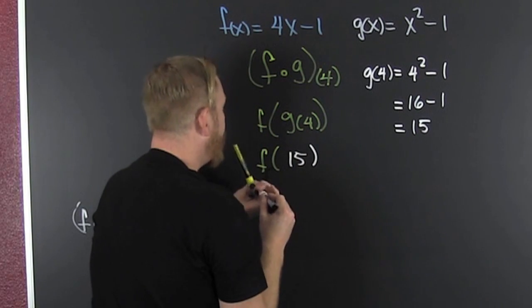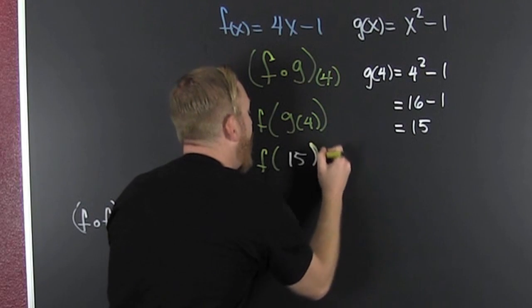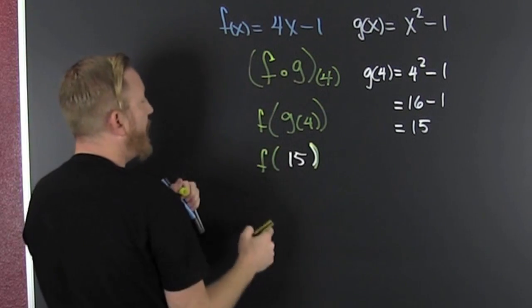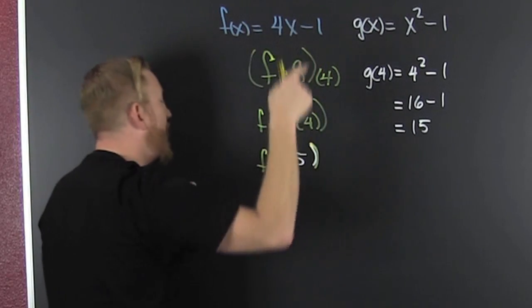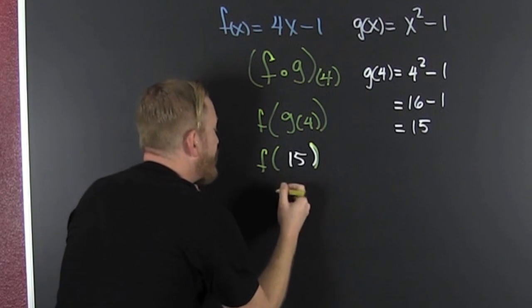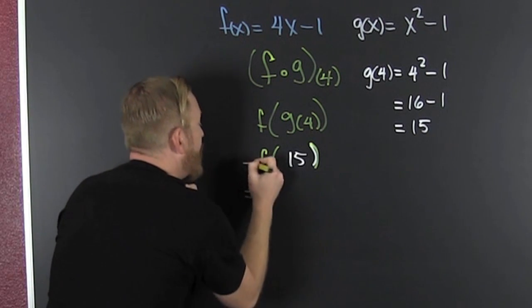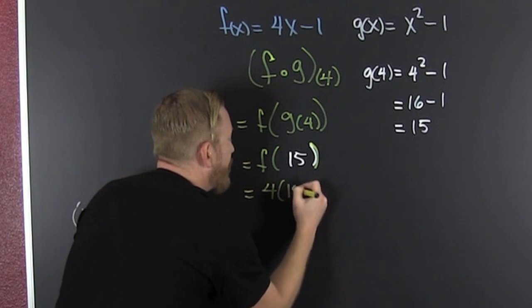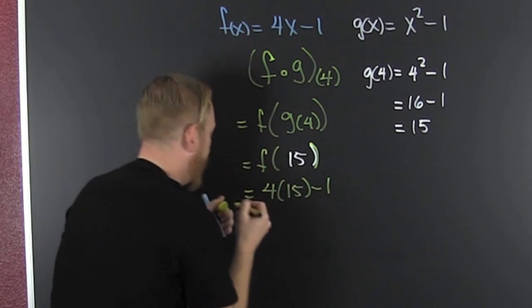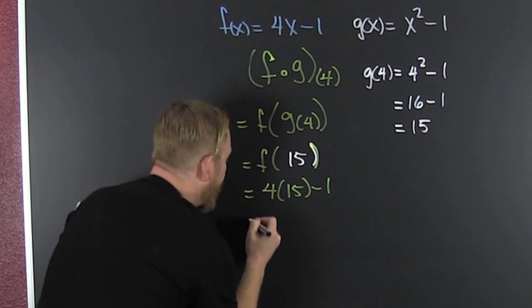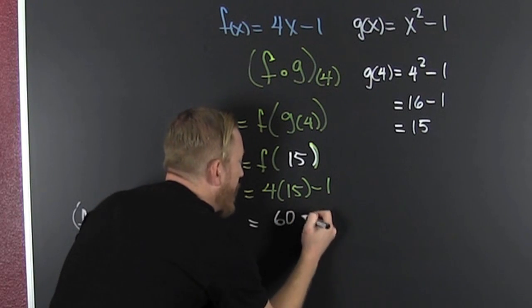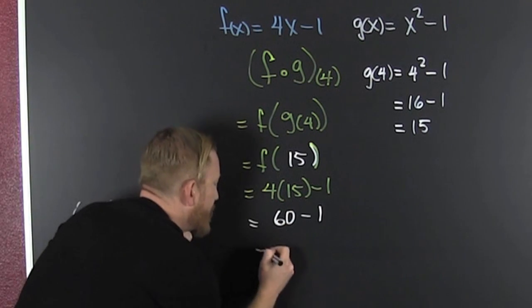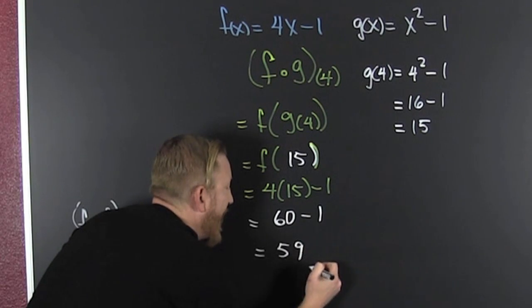Now, I'm using this f. That guy right there. So, everywhere I see an x, I'm going to put a 15. So, this is, wait for it, 4 times 15 minus 1. 4 times 15. That's going to get me 60 minus 1. And when I'm done, I'm going to end up with 59.